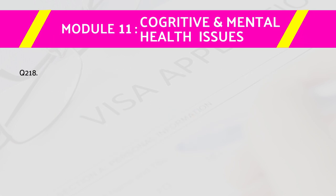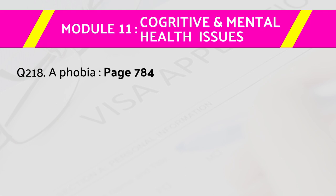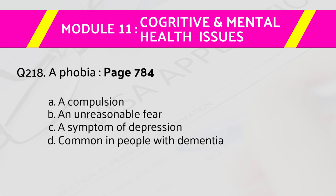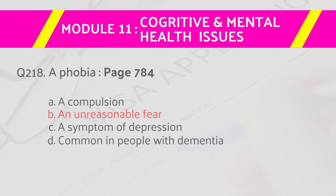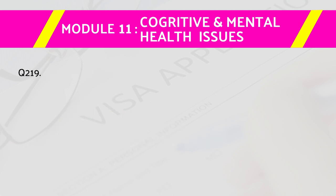Question number 218: A phobia — page number 784. Answers are: a) a compulsion, b) an unreasonable fear, c) a symptom of depression, d) common in people with dementia. The right answer is b) an unreasonable fear.